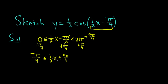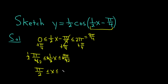We still have to solve for x. It's being multiplied by one-half, so we multiply through by 2 to cancel. That gives us π/2 ≤ x ≤ 9π/2, since 2 goes into 4 twice on both sides.